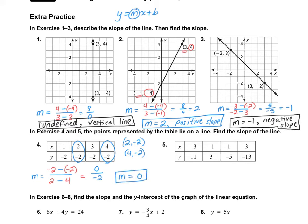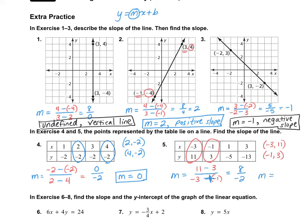For number 5, I'll choose negative 3 comma 11 and negative 1 comma 3. My y numbers are 11 and 3, and my x numbers are negative 3 and negative 1. So 11 minus 3 is 8, and negative 3 minus negative 1 becomes negative 3 plus 1, which is negative 2. That gives 8 over negative 2, which simplifies to negative 4. So my slope is negative 4.